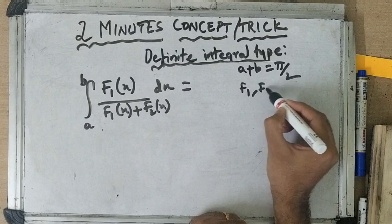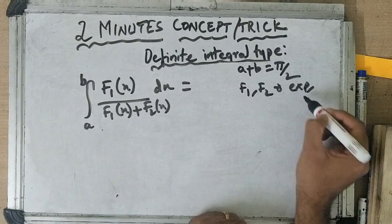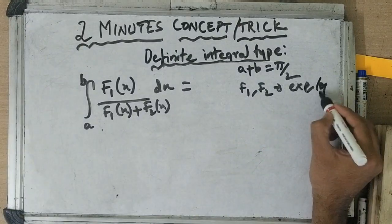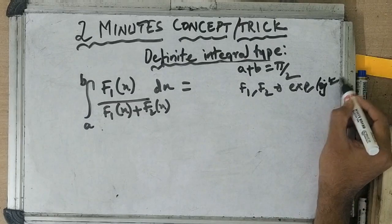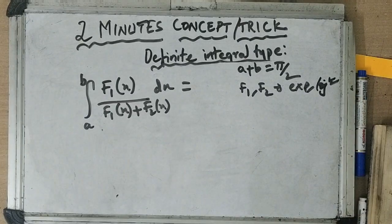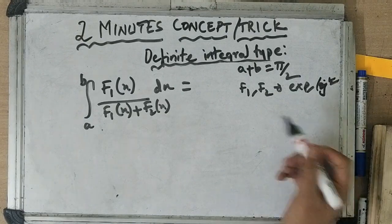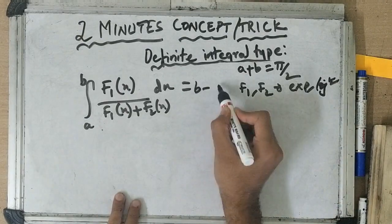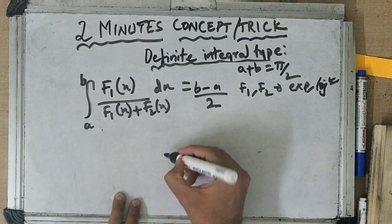And f1, f2 can be any type. It can be exponential, it can be logarithmic, anything. So whenever we have this, the answer is b minus a by 2.